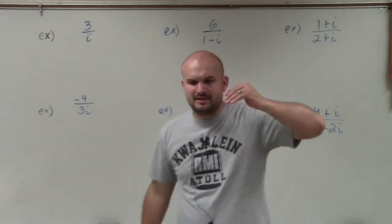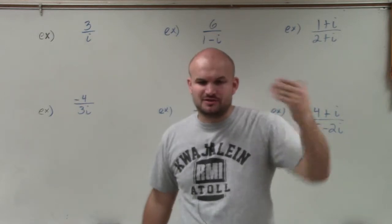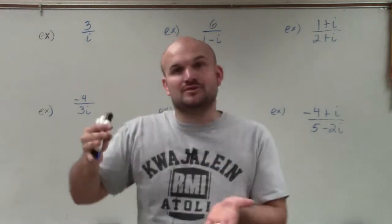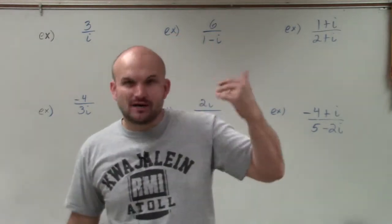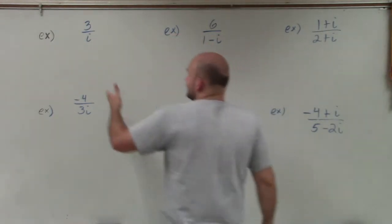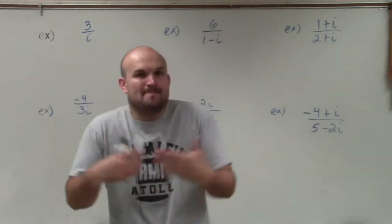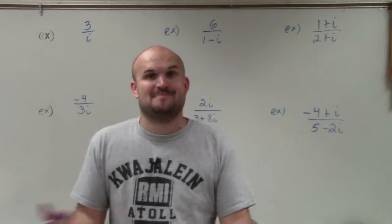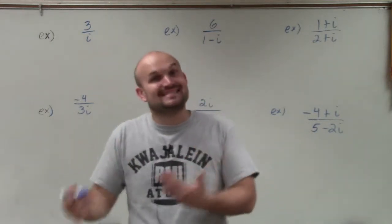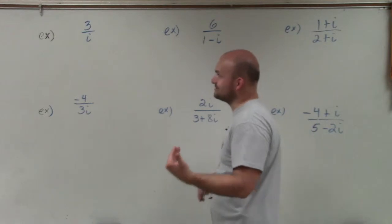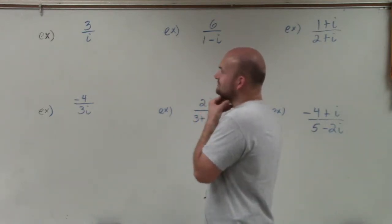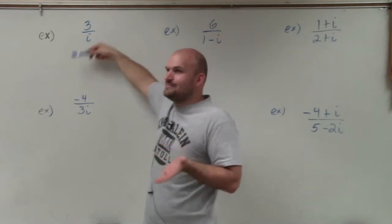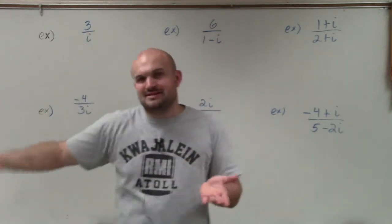When you think about the operation of division, it asks how many times does the denominator divide into the number on top. Now, i represents our imaginary unit — numbers that are imaginary, not part of our real number system. They have their own number system and represent numbers that do not exist as real numbers. So how can a number that does not exist in the real number system divide into a real number? The simple answer is: we can't.